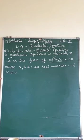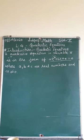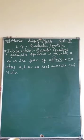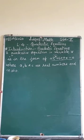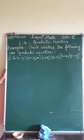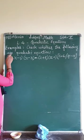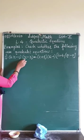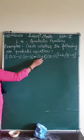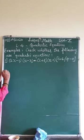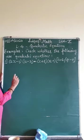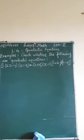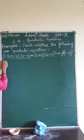Now let's see examples. I am taking examples from the NCERT textbook exercise. As I am solving the examples on the board, you do have to write down the sums. Check whether the following are quadratic equations. The first example is: (2x − 1)(x − 3) = (x + 5)(x − 1). This is from exercise 4.1, question number 1, sub-question 5.